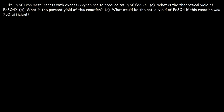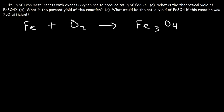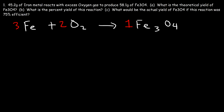To begin we need to write a balanced chemical equation. Iron metal is Fe, oxygen is O2, and this is going to produce Fe3O4. Now there are three Fe atoms on the right side so we need to put a three in front of Fe. There are four oxygen atoms on the right so we need to put a two in front of O2, and now everything is balanced.